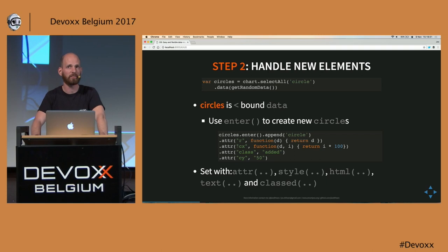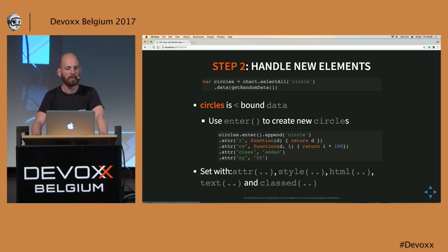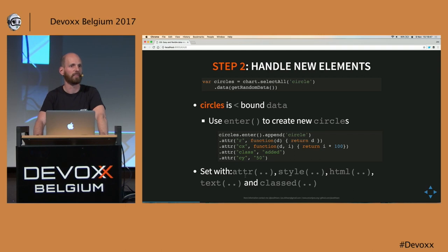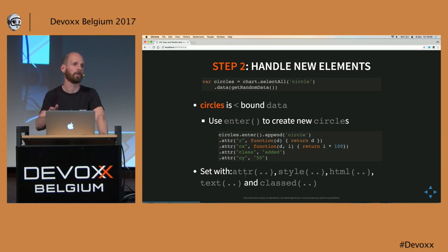We also position the element based on the index of our data. For each and every attribute or style that we set, we have access to both the index in the array and the actual data element. You can bind data of whatever type you want — here I'm just using numeric values, but you are free to use any data format you like.